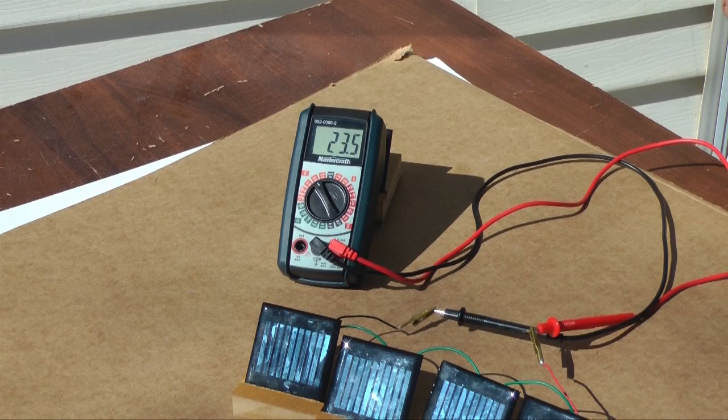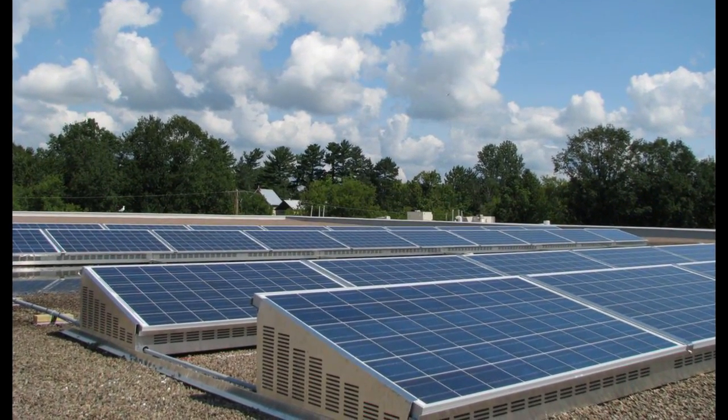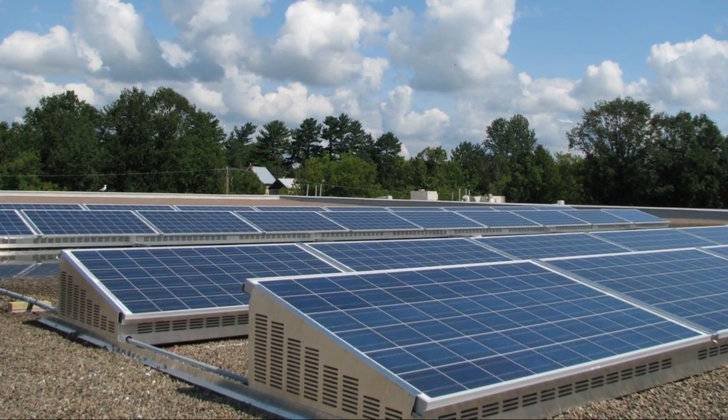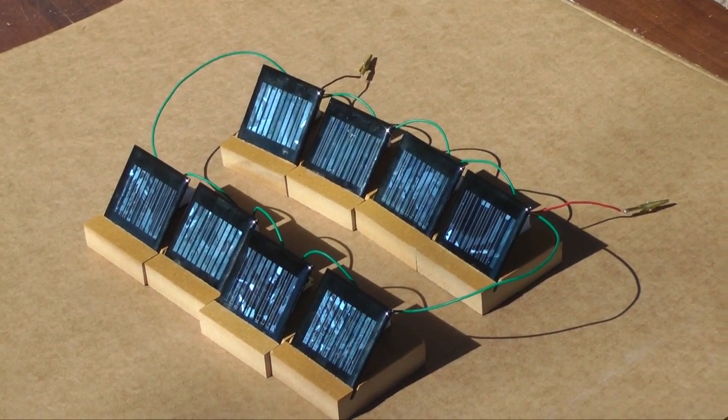Solar panels are often configured to increase both voltage and current. This type of installation is called an array. Here is a model array that does just that: increases voltage and current.